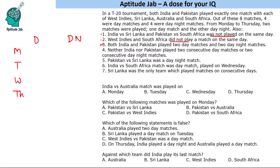Neither India nor Pakistan played two consecutive day matches or two consecutive day-night matches. What we get from this is that one day a team plays a day match, the next day a day-night match, then day, then day-night — and similarly for the other team. Pakistan versus Sri Lanka was a day-night match, though we don't yet know which day.